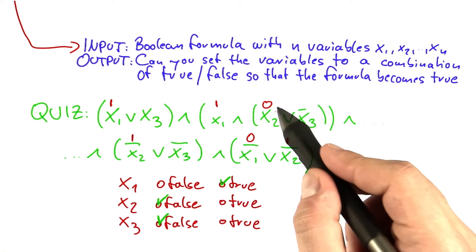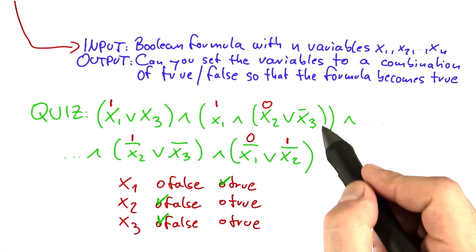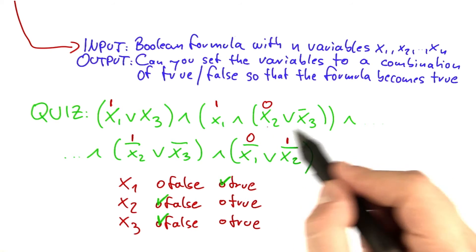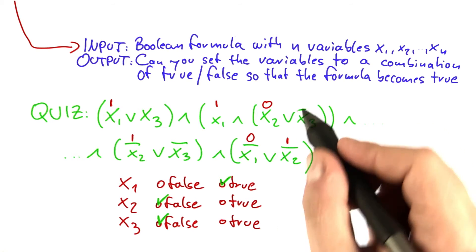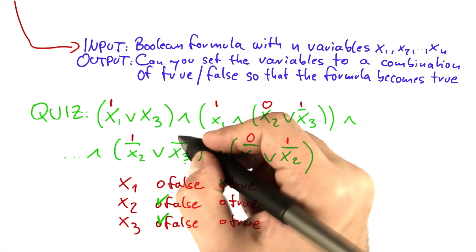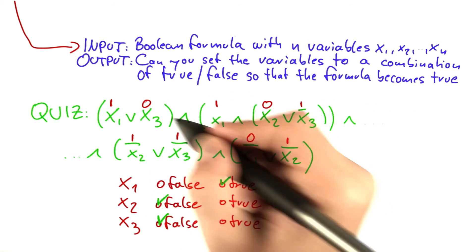And since this here has been set to 0, and again, we need to make sure that these brackets here evaluate to true, we also have to set x3 to false, so that this here becomes a 1, which gives us a 1 here as well, and 0 here as well.